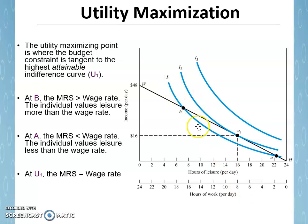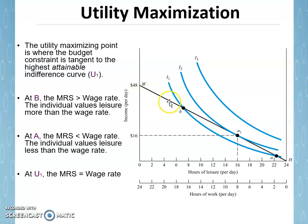Here we have our original indifference curves partnered with the budget constraint. The wage for this individual in the marketplace would be $48 divided by 24 hours of work, which is $2 an hour — ridiculous numbers, of course, but used for illustration purposes. This person has a budget constraint slope of $2 an hour, so for every hour of leisure they engage in, they will give up $2 in income.